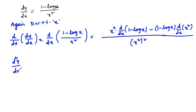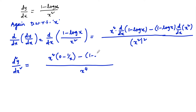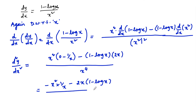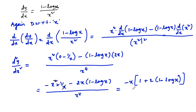So here d square y by dx square is equal to, upon x power 4: x square into differentiation of 1 minus log x — d by dx of 1 is 0 and differentiation of log x is 1 upon x — minus 1 minus log x into differentiation of x square which is 2x. So we have x square into 1 upon x minus 2x times of 1 minus log x, divided by x power 4. Which is equal to — we can cancel x square upon x and take minus x common — giving negative x of 1 plus 2 times of 1 minus log x, upon x power 4.